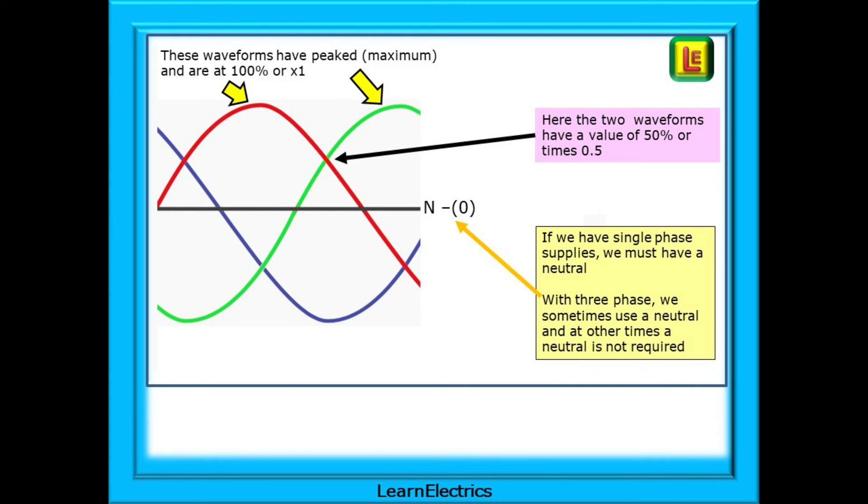Each waveform will rise to a maximum value before starting to drop again. We call this maximum the 100% value, or we could just call it the times 1 value. At another point in time, there are two waveforms that cross at a certain point. They are both at 50% in their waveform cycle, and as 50% is half of 100%, we call this the times 0.5 value.